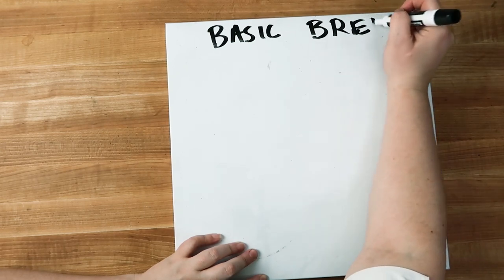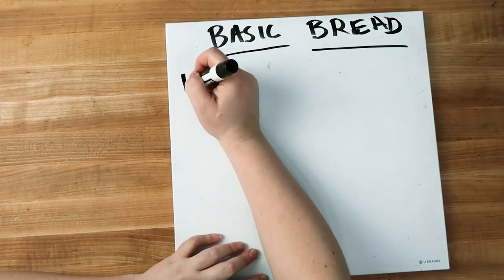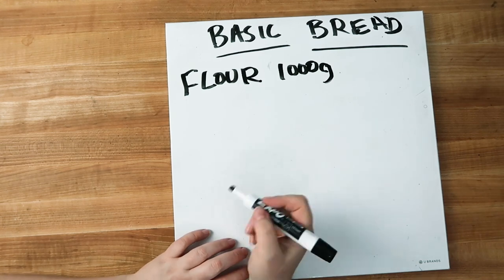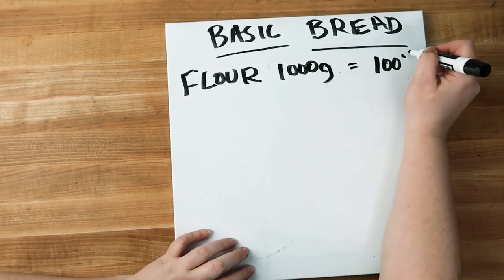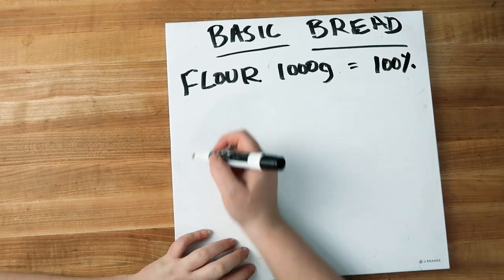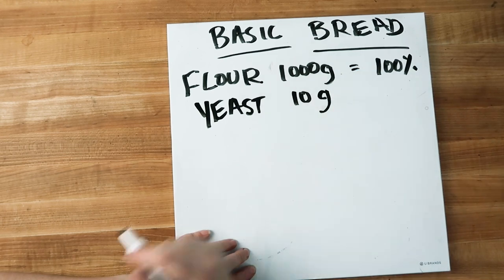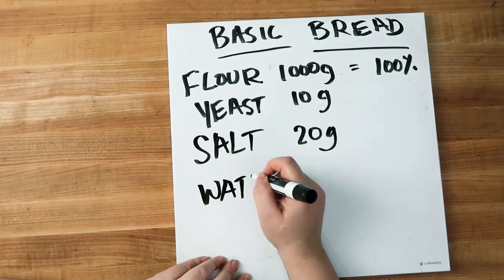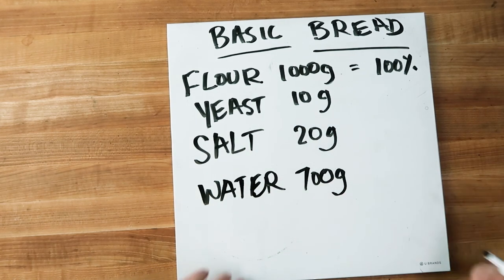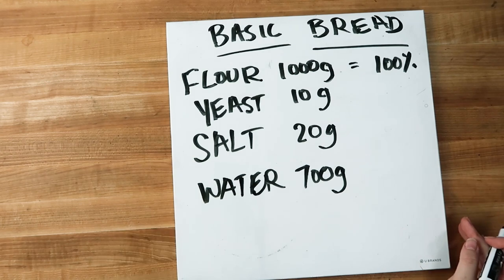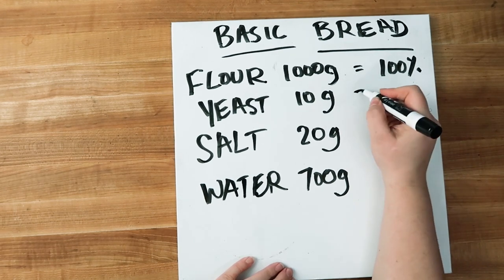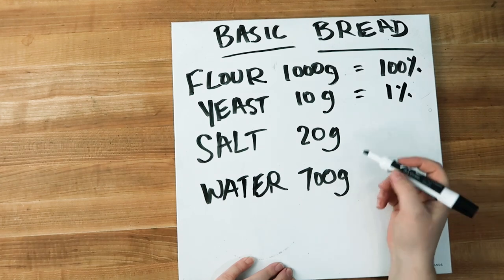Now let's look at a basic bread recipe and figure out the percentages together. Here we have 1000 grams of flour, and again that is going to be set at 100 percent no matter what the weight of the flour is. We also have 10 grams of yeast, 20 grams of salt, and 700 grams of water. When we start comparing these ingredient amounts to our flour, we can come up with our baker's percentage formula. For 10 grams of yeast: 10 divided by 1000 times 100 gives us 1 percent.